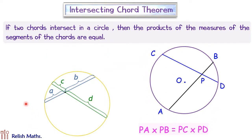So here again we have two chords, one is this blue color, another is green color, they are cutting each other. Then the product of length A into B will be equal to the product C into D.